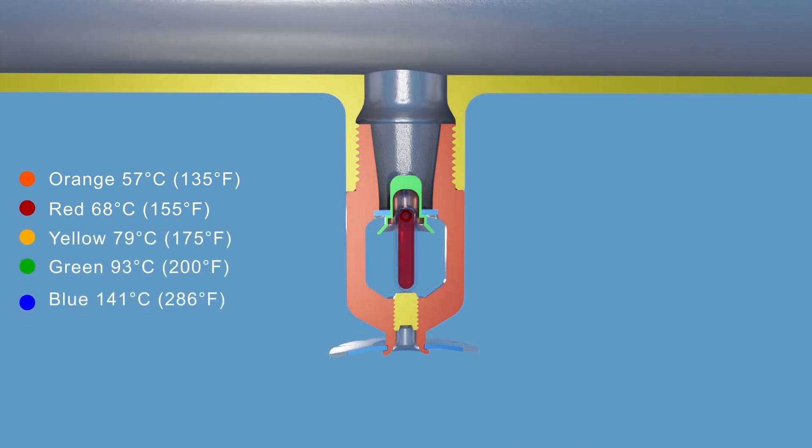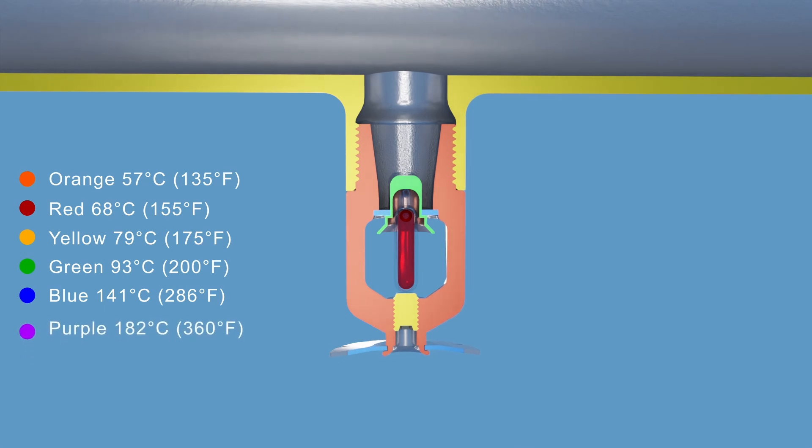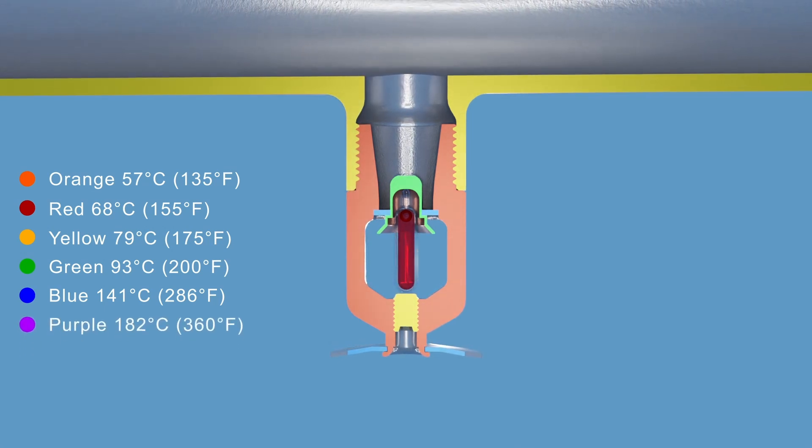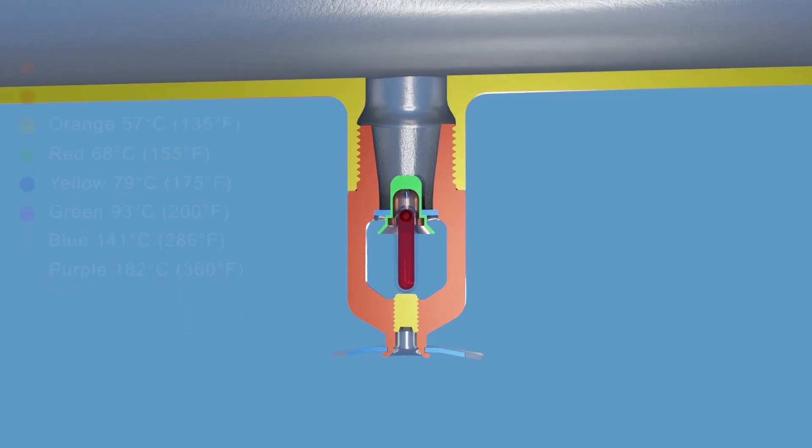These color codes help in quickly identifying the temperature rating of the sprinkler head. The most common glass bulb color is red that breaks at 68 Celsius or 155 Fahrenheit.